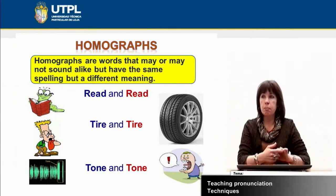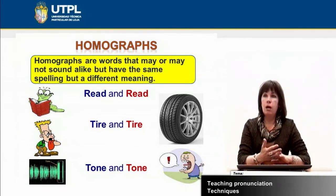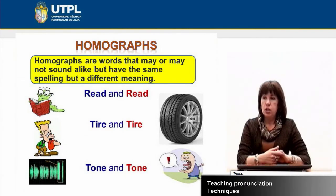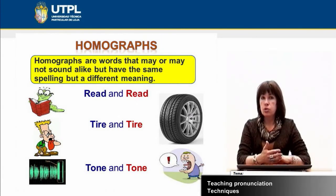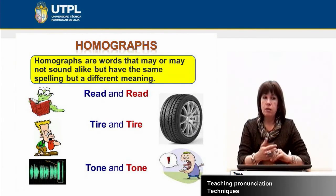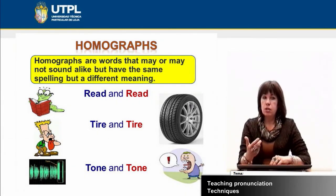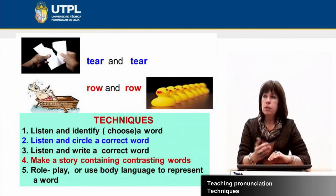Another difficulty in teaching pronunciation involves so-called homographs. Homographs have identical spelling but different meaning. Again, the basic element here should be pictures for students to make distinctions between the different meanings of the word — like 'read' and 'read,' or 'tire' meaning a physical condition and 'tire' as a part of a car. You may bring pictures, flashcards, or ask your students to prepare material and stick it on the wall in the classroom.